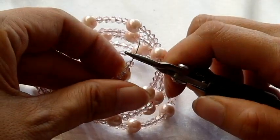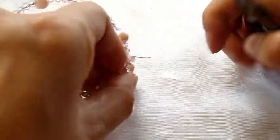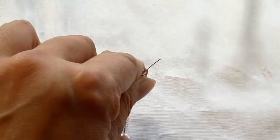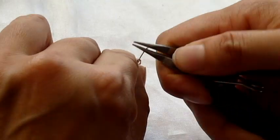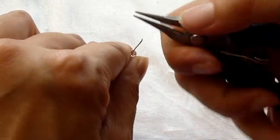Make a 90-degree bend, use your round nose pliers, and turn the wire inward.